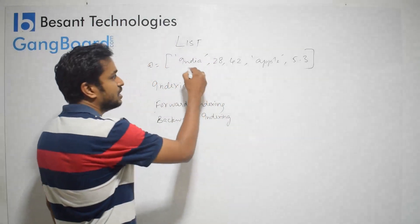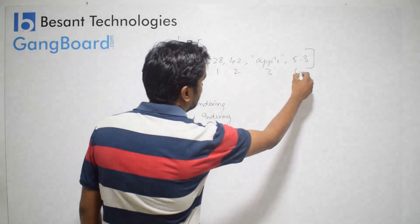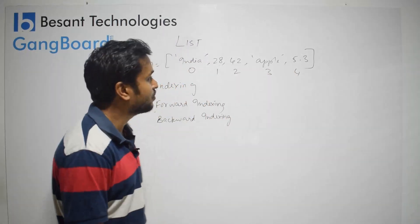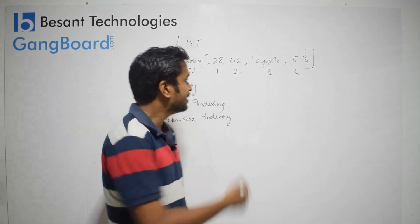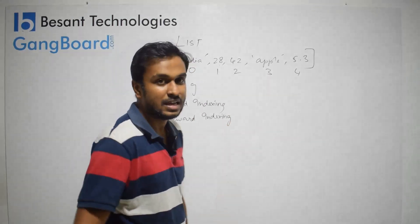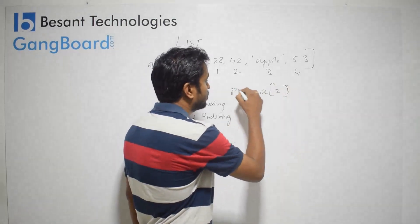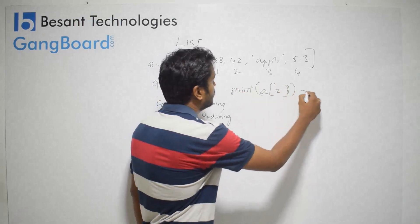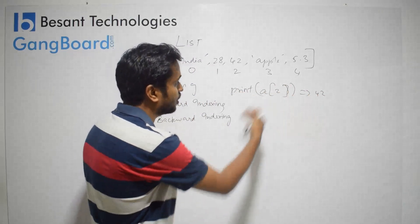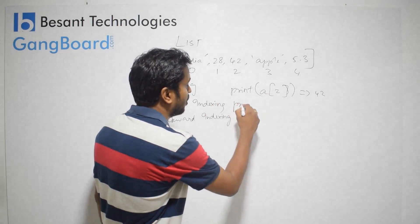So in our example, 'India' is at index 0, 28 is at index 1, 42 is at index 2, then index 3, and 5.3 at index 4. This is called forward indexing or positive indexing. So if we print a[2], the output is 42. We can use the index to access a specific position. We can also go for a concept called slicing.